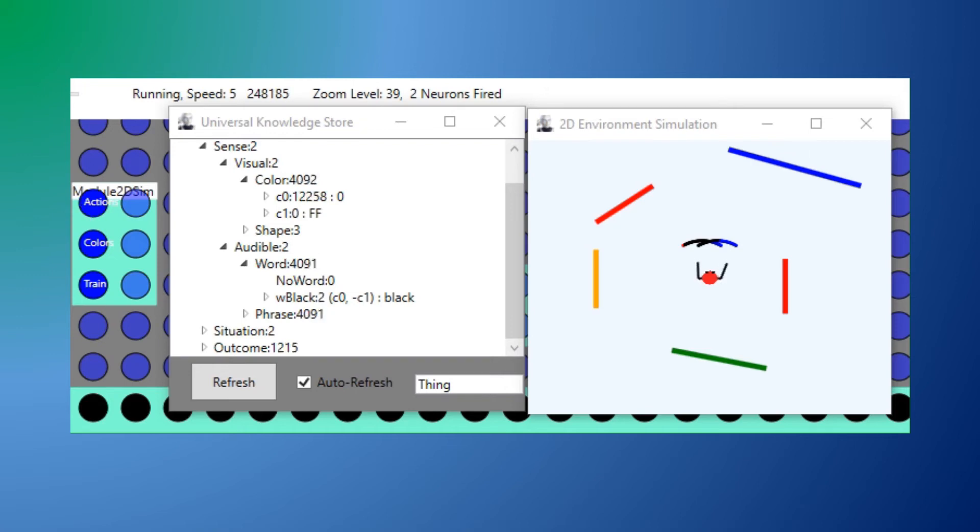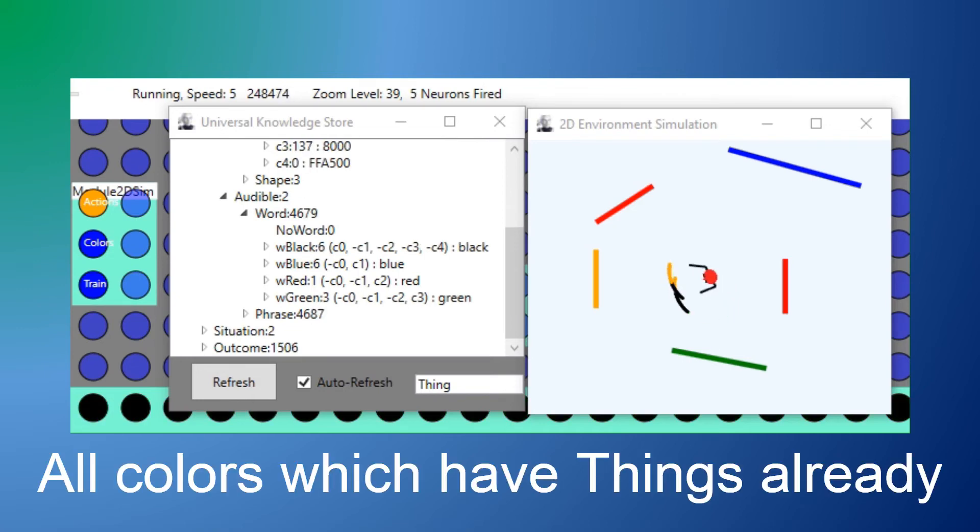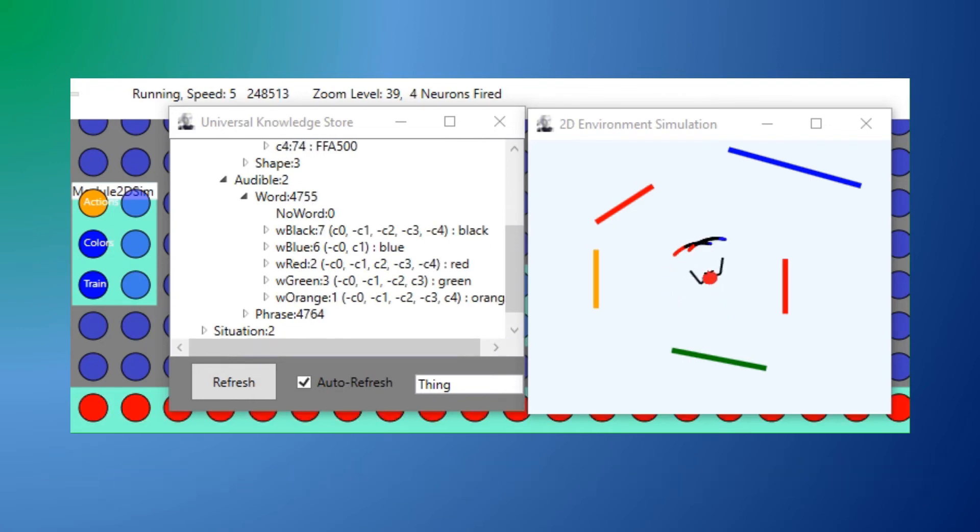As Sally turns around she sees different colors, and the world simulator sends different color words. You can see that the words are added, each with references to all the colors, and you can look at the sign of the reference, which is the net count of hits and misses, to see that w_black is associated with c0, w_blue with c1, etc.